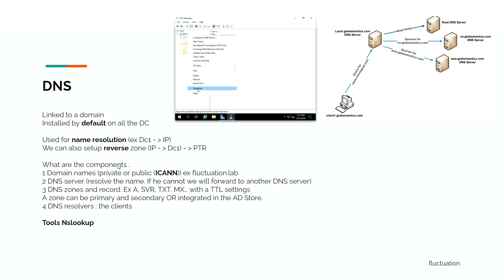What are the components? First you have the domain name — it can be private or public. For example, fluctuationit.lab is one of my private domains. The DNS server resolves the name, and if it cannot, it will forward it to another DNS server. In the DNS zone, you manage records — some are automatically created. You can have A, SRV, TXT, MX records with a TTL setting. A zone can be primary, secondary, or AD-integrated. And you have the DNS resolver — the client — and a well-known tool is nslookup.